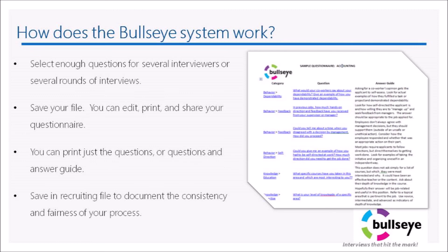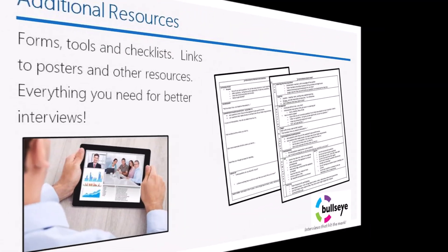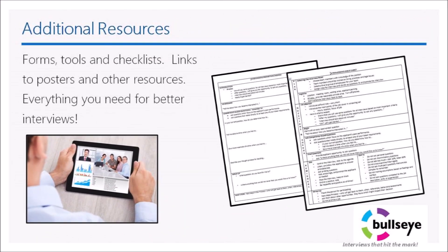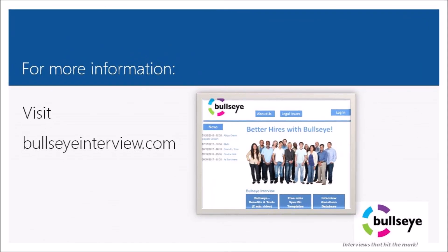However, don't keep copies of all the individual applicant evaluations in the file. Each question provides an answer guide on what to look for in the applicant's response. You can also select from pre-made job-specific templates that are a selection of attributes common to specific positions. Also included are additional resources such as forms, tools, and checklists that will assist you in standardizing your interview process. For more information, see bullseyeinterview.com.